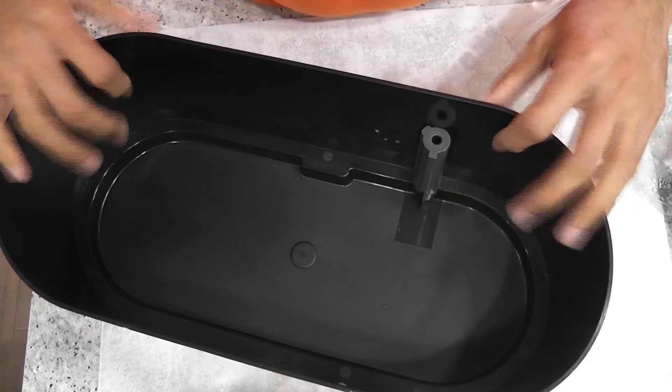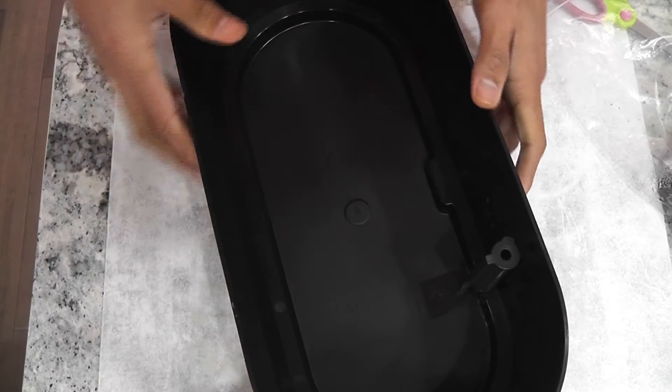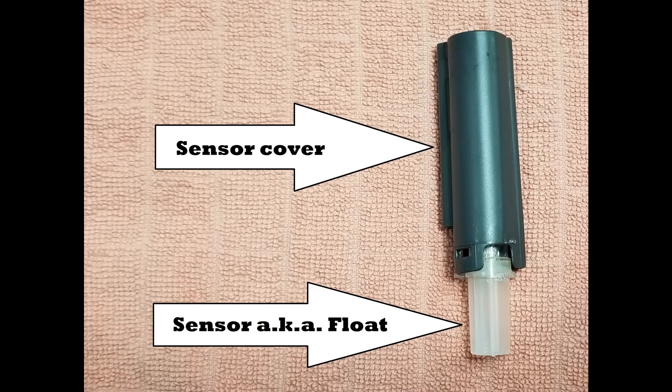That's it, now it is locked. If you shake it, you can see the float is freely moving. So that's how you put it back. That is all about the water sensor in AeroGarden Bounty. Thanks for watching. Happy AeroGardening.